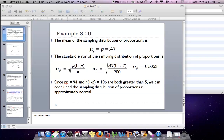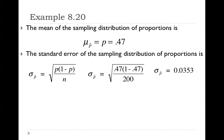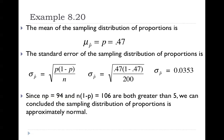The result is 0.0353 — this is the standard error of the sampling distribution of proportions. If you multiply np, you get 94: take 0.47 times 200. If you multiply 0.53 times 200, you get 106. Both of those are greater than 5, therefore you can use the bell curve — you can use the normal distribution to answer this question.